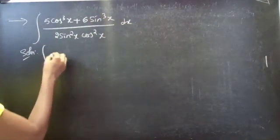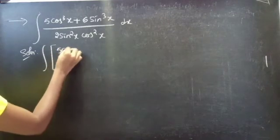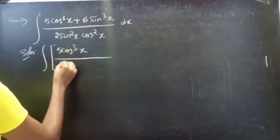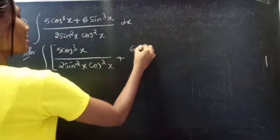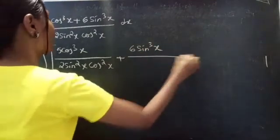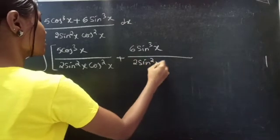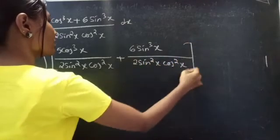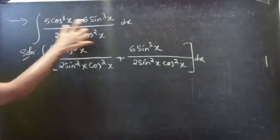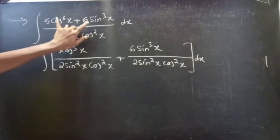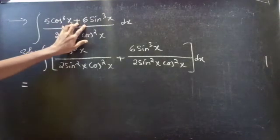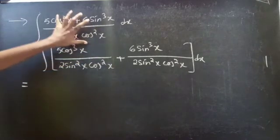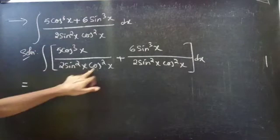So you would write it as: 6cos³x divided by 2sin²x times cos²x, plus 6sin³x divided by 2sin²x times cos²x, dx. Since you are having only one term in the denominator and two terms in the numerator, these two terms are separated by plus. So you can split this total fraction into two fractions.